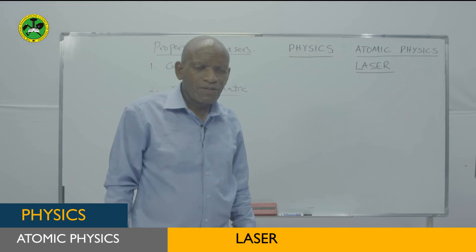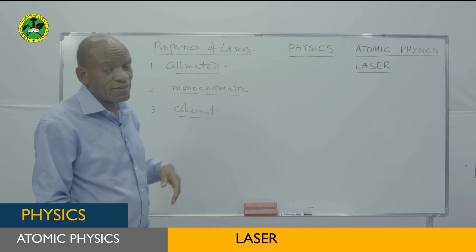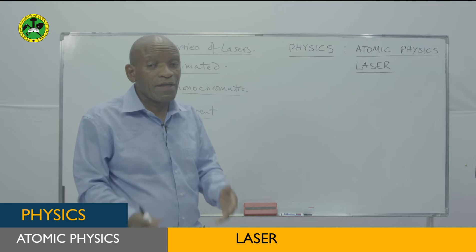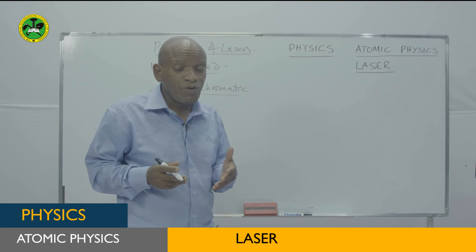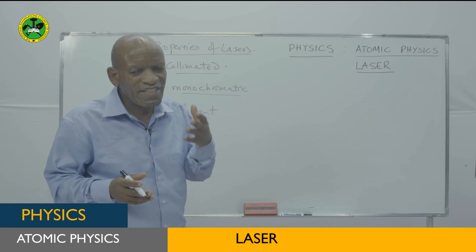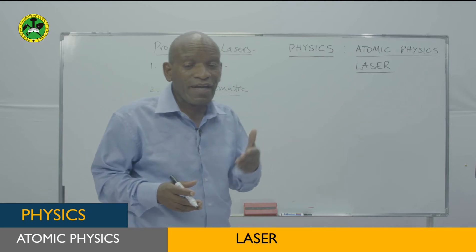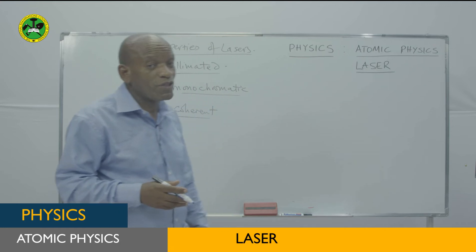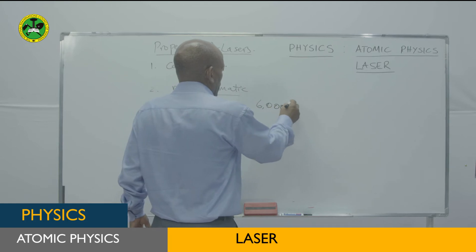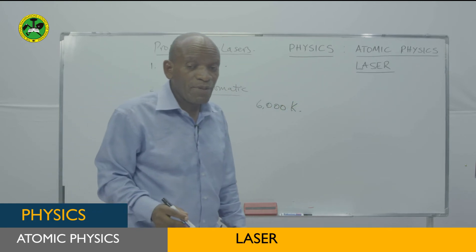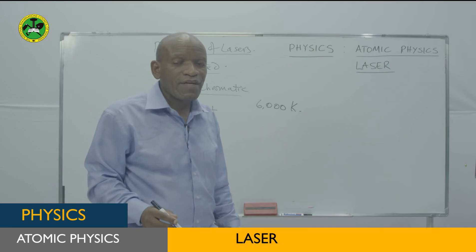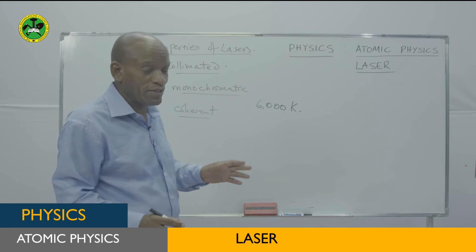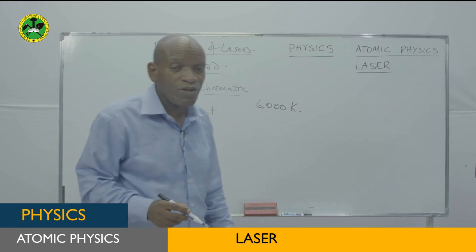So these are the three properties of lasers: they should be collimated, monochromatic, and coherent. You can see that these lasers, whenever they are produced, are really very strong. Within a very small microscopic region, the intensity of the laser is of a very high temperature — sometimes even greater than the temperature of the sun, which is about 6,000 degrees Kelvin.